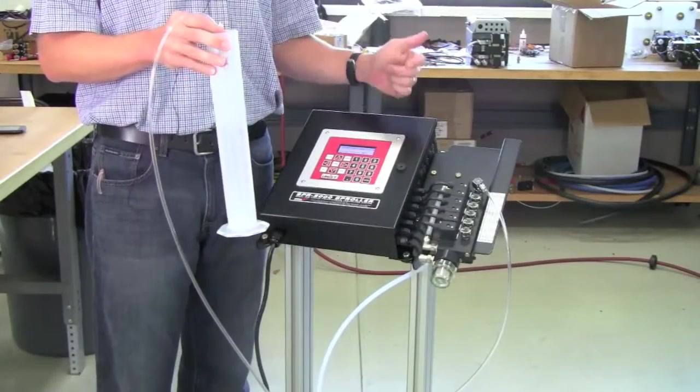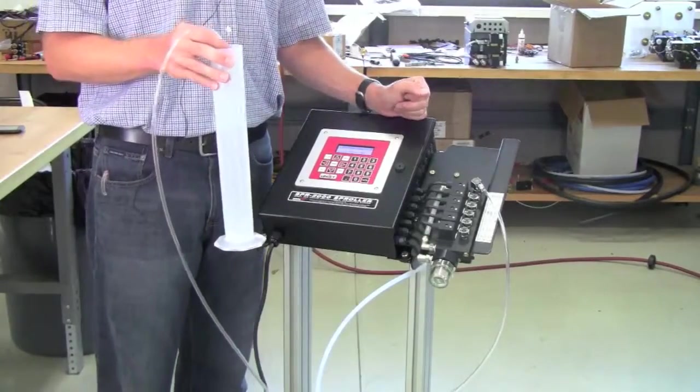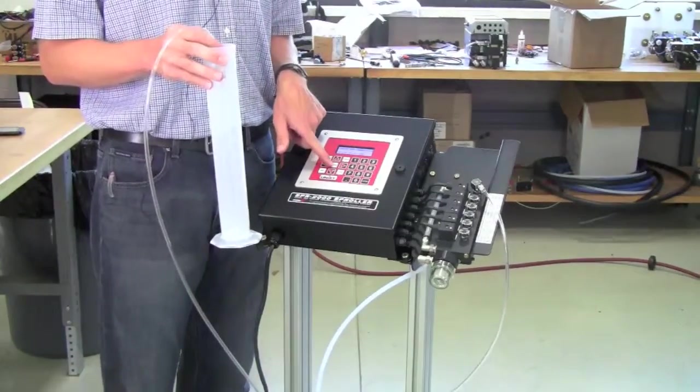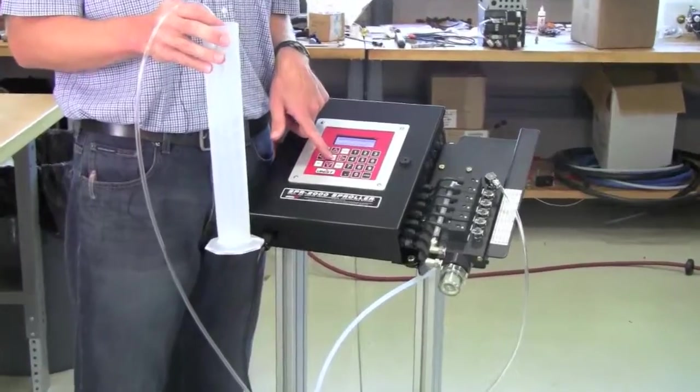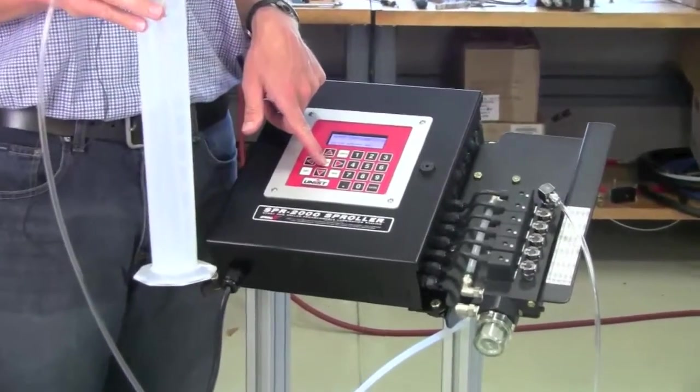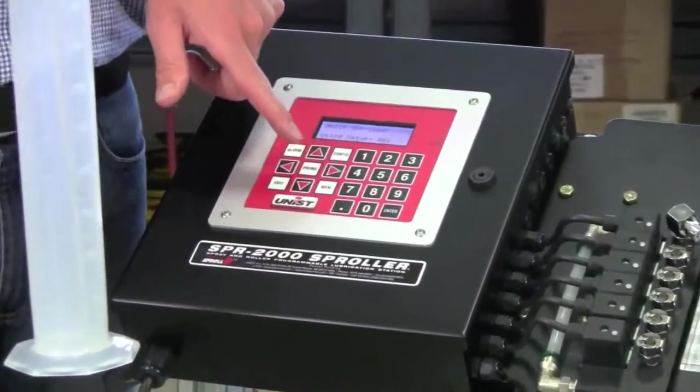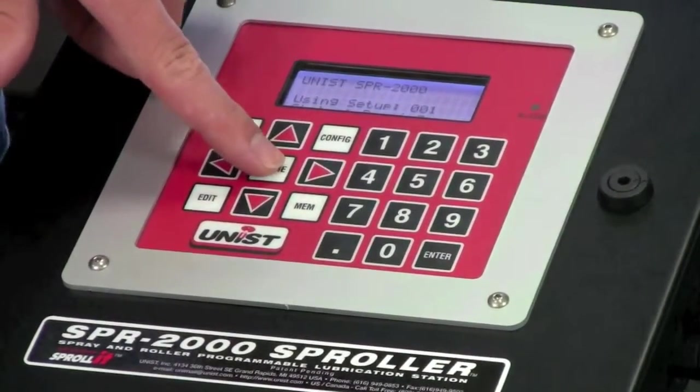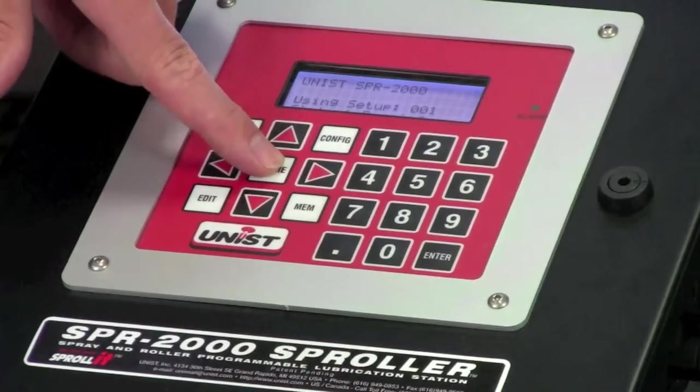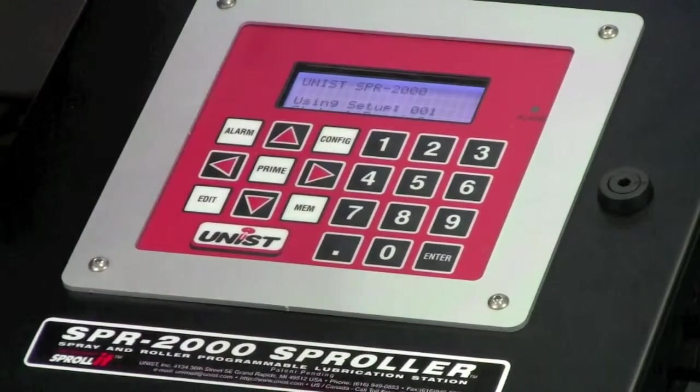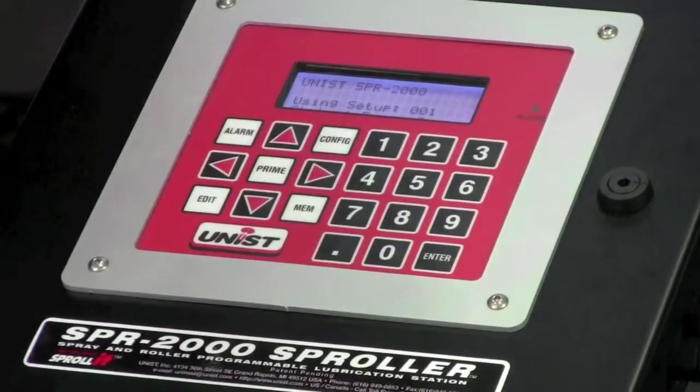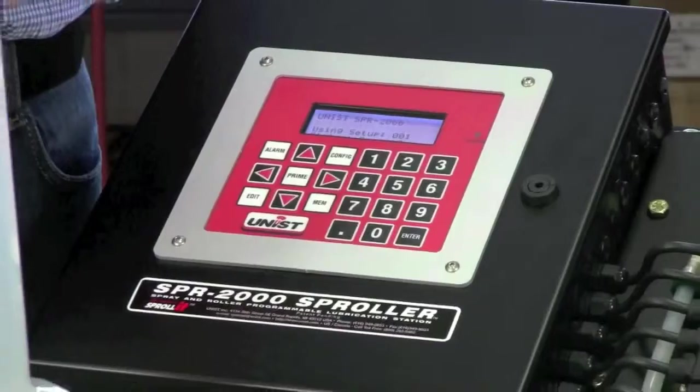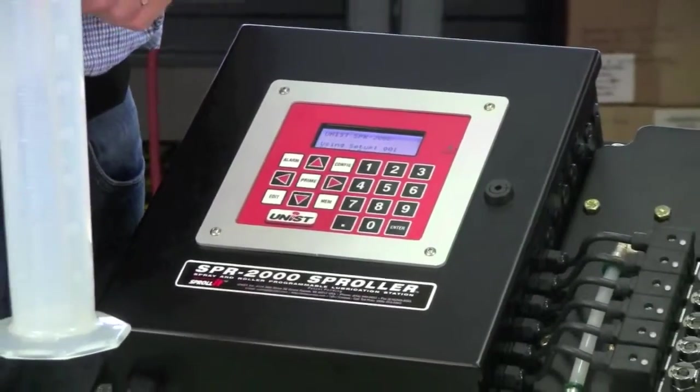The simplest way to open the solenoid valve for a given amount of time is to utilize the prime button. The prime button will open all of the valves for as long as you hold the button down. So in this case what we'll do, and this is what the manual recommends also, is to hold the prime button down for 30 seconds. And while we're holding that prime button down, we'll be collecting all of our fluid in this graduated cylinder. At the end of 30 seconds, we'll let go of the prime button and look to see how much fluid we have.